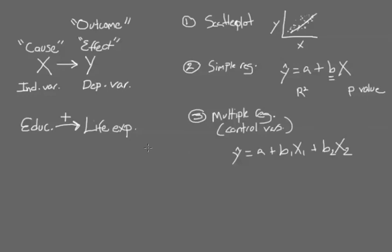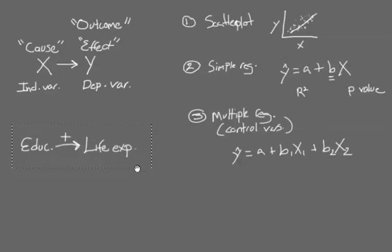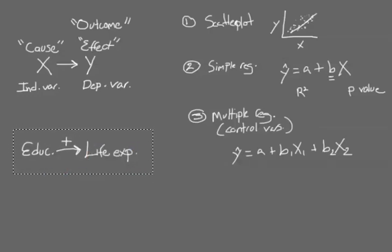Let me show you what that looks like theoretically. The reason to do the multiple regression analysis is because of a conceptual issue. Here we have the relationship between education and life expectancy. In the data we're going to see this relationship in a scatter plot and estimate it in a simple regression.